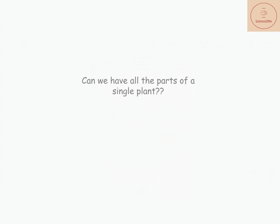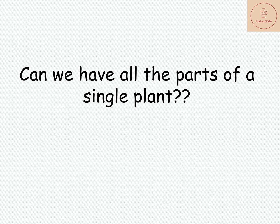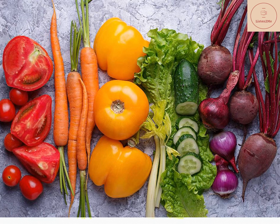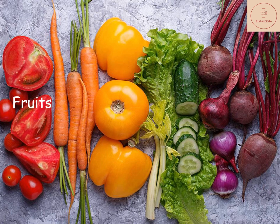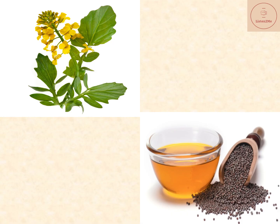Can we eat all the parts of a single plant? No, not all parts of a plant are edible, that is eatable. We eat the fruits of some plants, the roots of some, and the leaves of some. Some plants have two or more edible parts. For example, the seeds of the mustard plant give us oil and the leaves are used as a vegetable. Can you think of some other such plants? Write it down in the comment section.